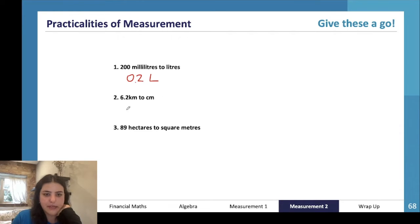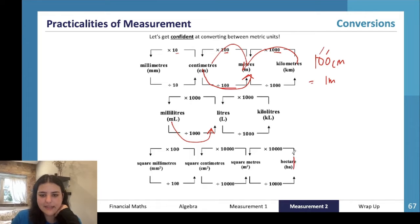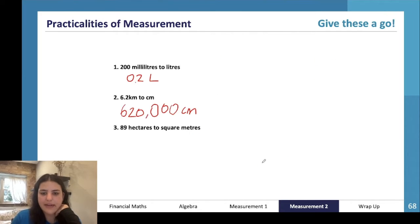And it's actually going to be 620,000. And then 89 hectares to square meters - hectares to square meters is times by 10,000. So 89 times by 10,000 is 890,000 square meters. Always write your units.